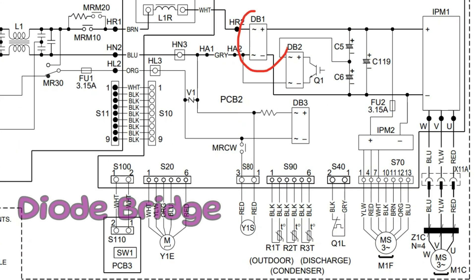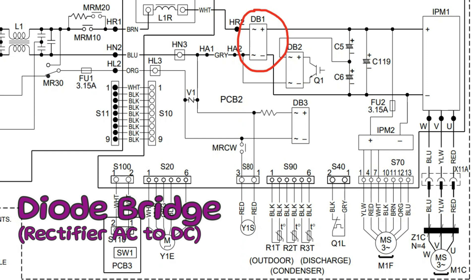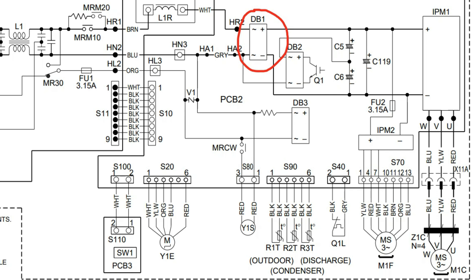Moving on, we come to a diode bridge — which is a rectifier. It converts an alternating current signal to a DC signal, and the reason we do this is because a DC signal is a little more stable and we have more control over it. You're going to have different arrangements when it comes to diode bridges in these units. Sometimes you might have one diode bridge feeding one power module for the compressor and another feeding a separate power module for the condenser fan motor, since these motors use different voltages. Sometimes you might have diode bridges in series together, which adds another layer of stability and reduces interference.